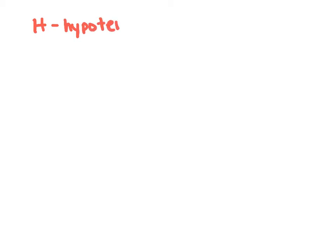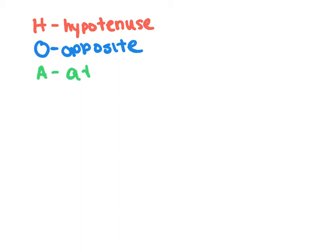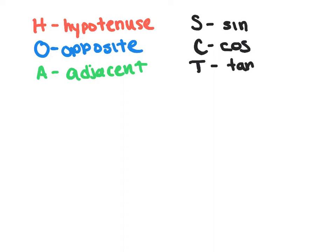To help you remember these relationships, there are mnemonic devices. H stands for hypotenuse, O stands for opposite, and A stands for adjacent. S stands for sine, C stands for cosine, and T stands for tangent.